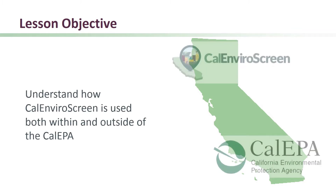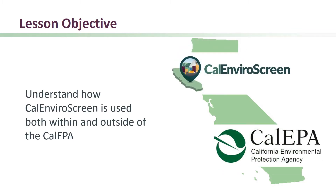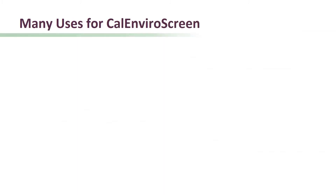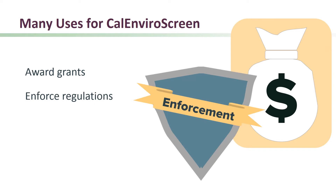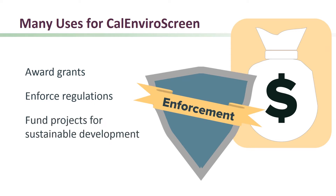Now let's take a look at how CalEnviroScreen is being used both within CalEPA and outside of the agency. CalEnviroScreen is used by a number of different organizations in different ways. It is used to award grants, for enforcement of regulations, to fund projects that encourage sustainable development, and it can be used by communities and governments as they see fit.